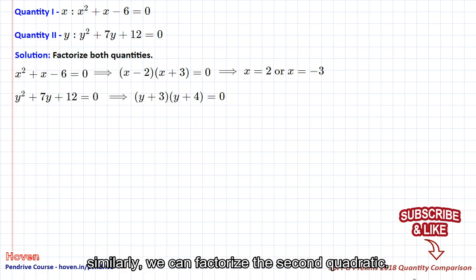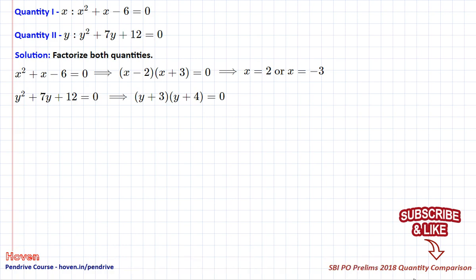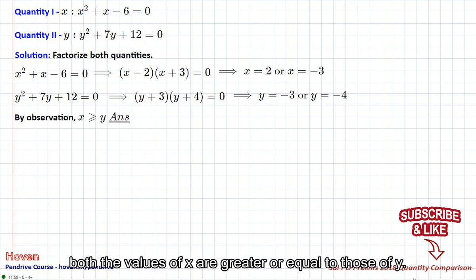Similarly, we can factorize the second quadratic, which gives y as minus 3 or y as minus 4. Both the values of x are greater or equal to those of y.